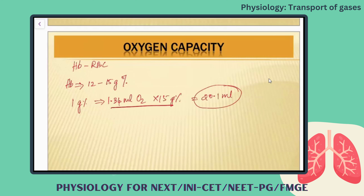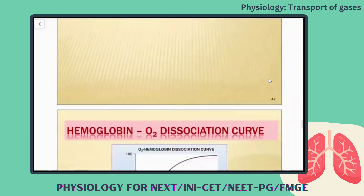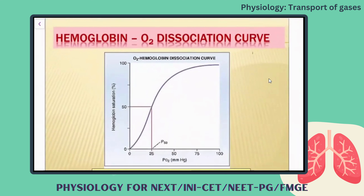For a person with hemoglobin of 15 gram percentage, this is the oxygen carrying capacity. Now we are going to see the hemoglobin oxygen dissociation curve. This is a sigmoid curve, and it tells you the oxygen saturation level. The x-axis represents the partial pressure of oxygen, and the y-axis represents the hemoglobin saturation level.